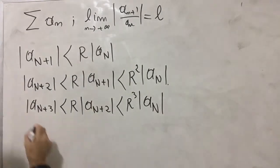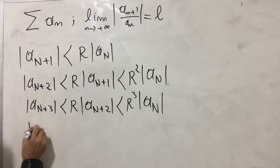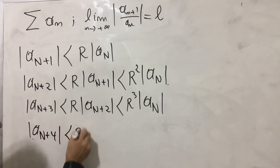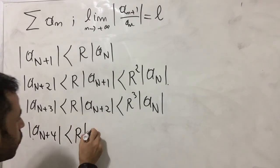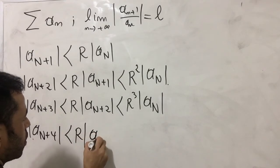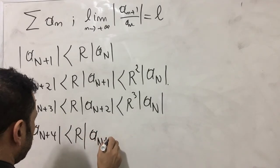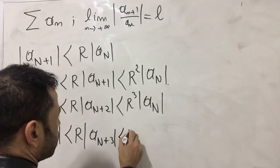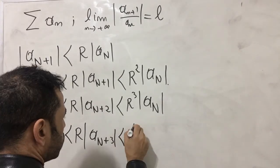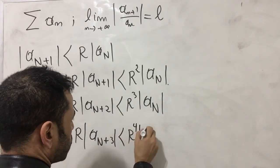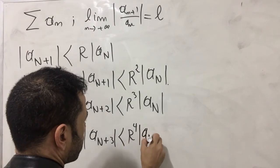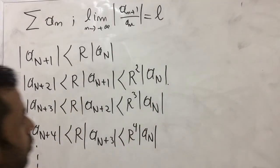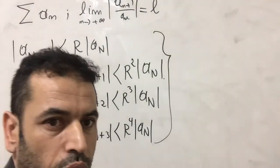Continuing, the fourth term gives |a_{N+4}| < R · |a_{N+3}|, which is strictly less than R⁴ · |a_N|. This pattern continues all the way to infinity.